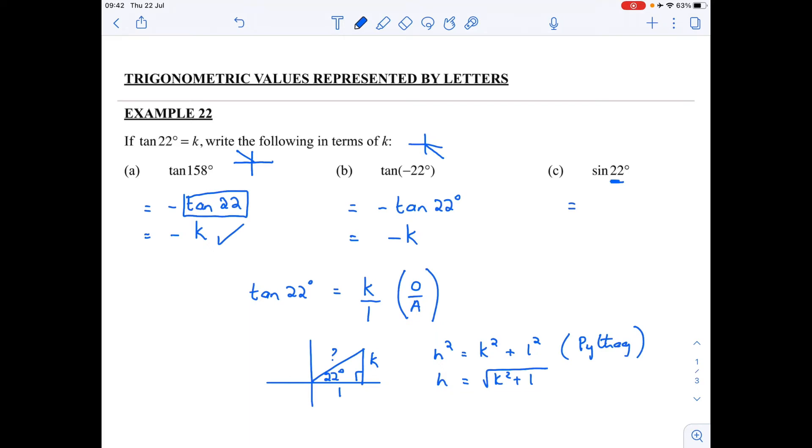So if I go back now to my question, sin of 22, sin, remember, is always going to be opposite over hypotenuse. So in terms of my little sketch, opposite is going to be k over my hypotenuse.